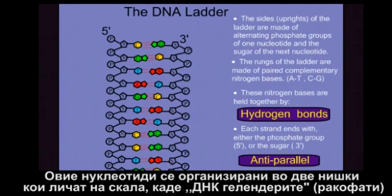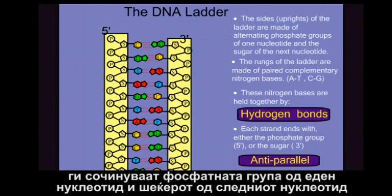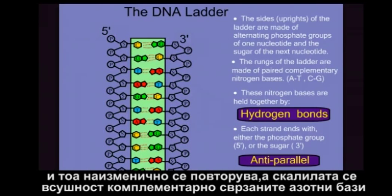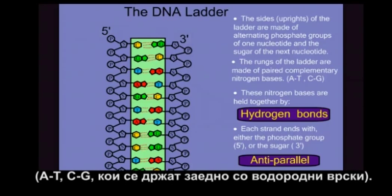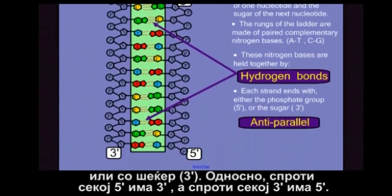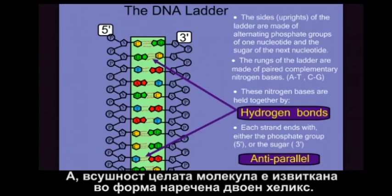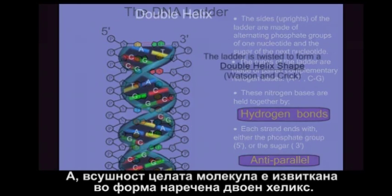These nucleotides are arranged in a double strand resembling a ladder, where the sides or uprights of the ladder are made of alternating phosphates and sugars, while the rungs of the ladder are made of pairs of complementary nitrogen bases — adenine with thymine, cytosine with guanine — held together by hydrogen bonds. The two strands run anti-parallel to each other, with 5' and 3' ends opposite each other. And the entire molecule is twisted on itself in a shape called a double helix.